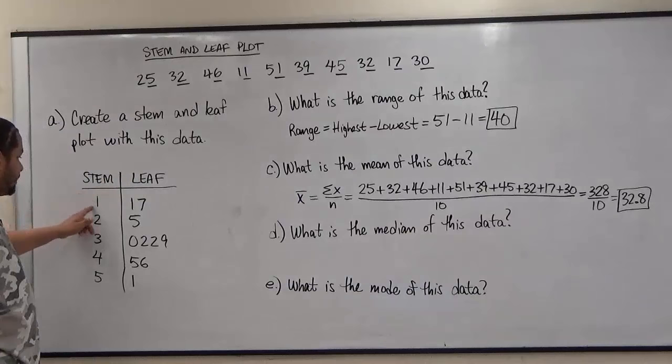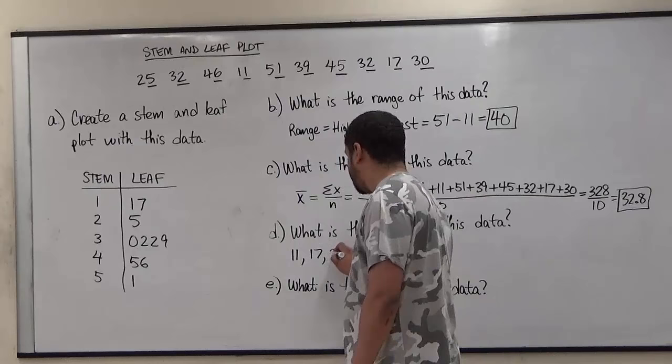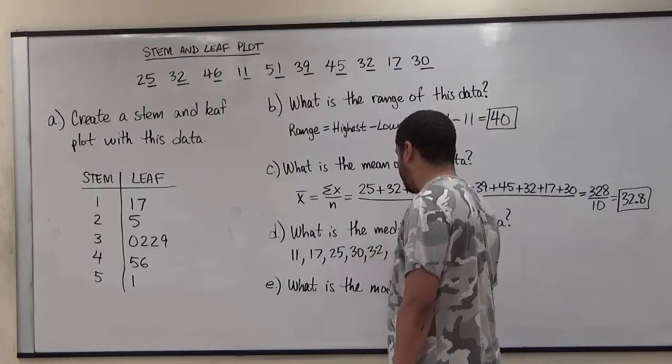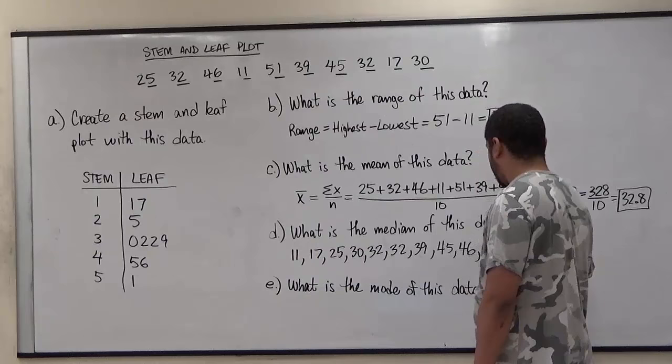So we have the first stem and leaf is one and one. The second is one and seven. The third, two and five. The fourth, three zero. The fifth, three two. The sixth, three two. The seventh, three nine. The eighth, forty-five. The ninth, forty-six. And the tenth is fifty-one. This is how useful a stem and leaf chart is. It helps us arrange data in order going from smallest to highest.